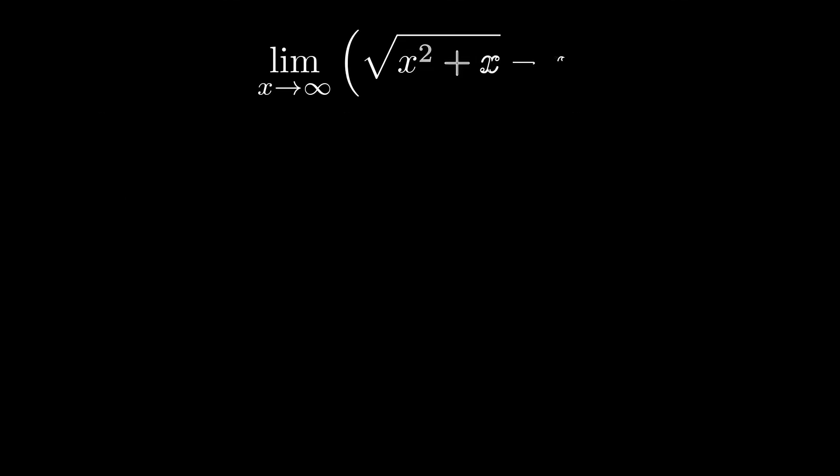Here's an example. Consider this limit as x approaches infinity. At first glance, if you plug in infinity, as if you could do such a thing, we get infinity minus infinity, this indeterminate form.